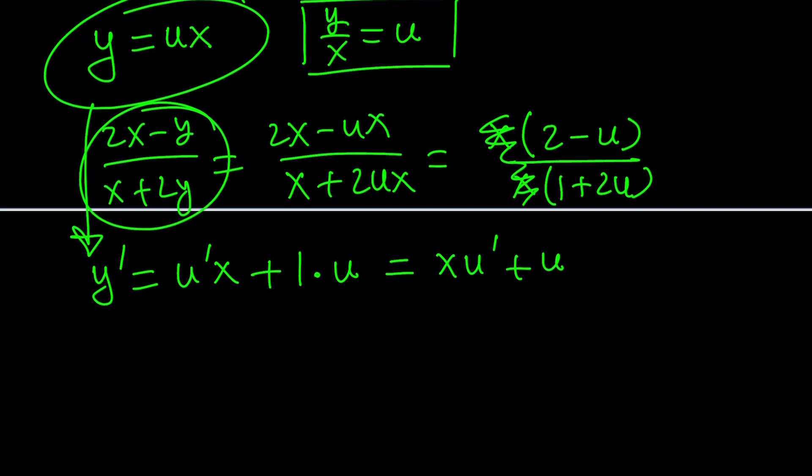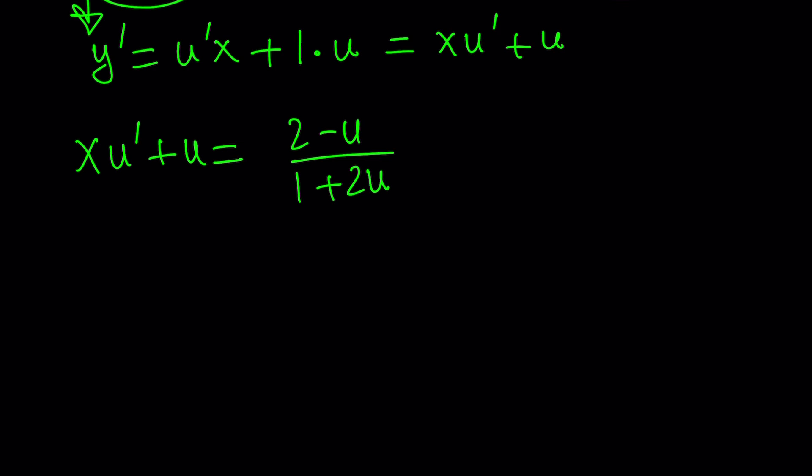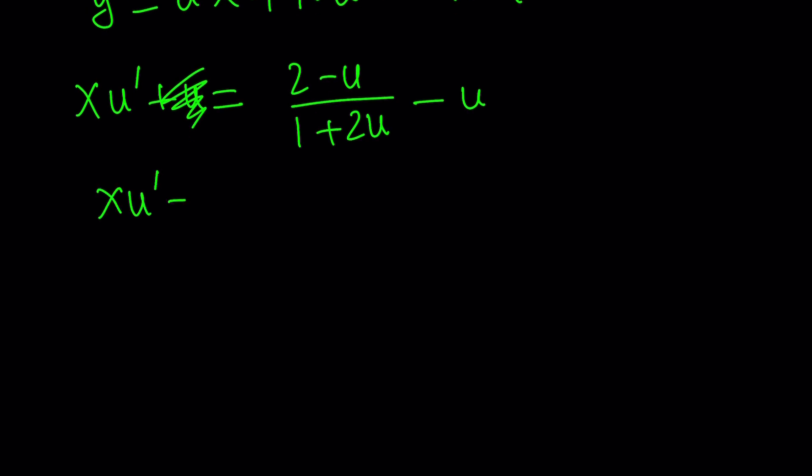Now let's go ahead and substitute that on the left. And on the right-hand side, we're just going to have that, right? We already did that. 2 minus u divided by 1 plus 2u. Now since we're trying to kind of find the relationship between the u and the x, let's go ahead and subtract u from both sides. This will become zero. And then let's go ahead and make a common denominator. That'll give us 2 minus u minus u minus 2u squared divided by 1 plus 2u. And then let's make sure we got it right. Okay, so this should give us negative 2u squared minus 2u plus 2 divided by 2u plus 1.